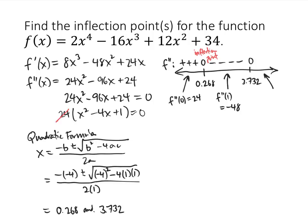Now we've got to pick one more x value, something bigger than 3.732 — how about 4? When we plug 4 into f double prime, that turns out to be 24, which is positive. That means that I have another inflection point, because at 3.732 my second derivative changed from negative to positive.